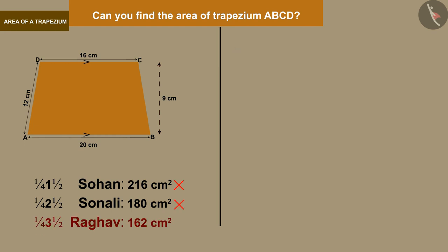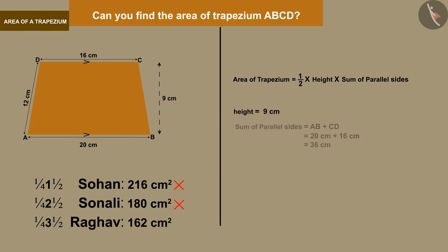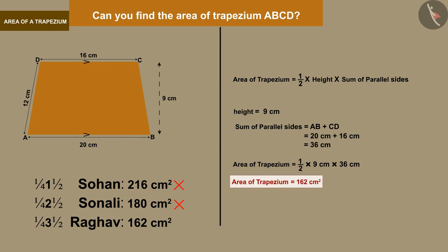Let us now see the method of Raghav. Raghav used the correct formula to find the area of a trapezium, then found the values of the required parameters like the height and the sum of the parallel sides. Substituting these into the area of trapezium formula, he gets the area as 162 cm², which is the correct answer.